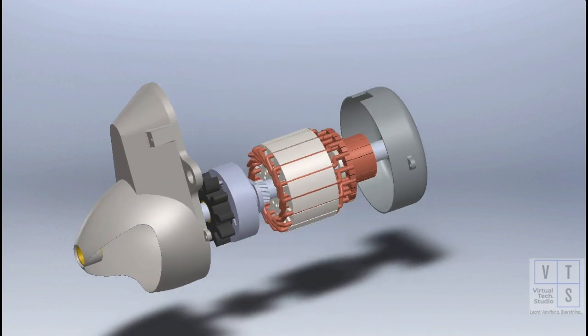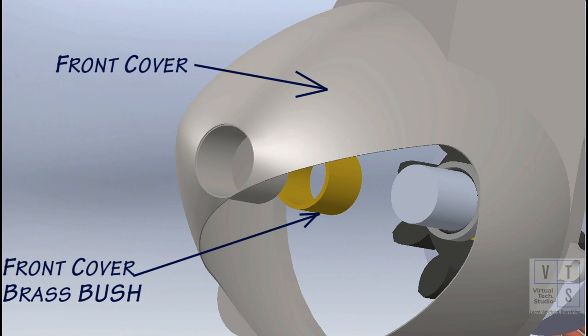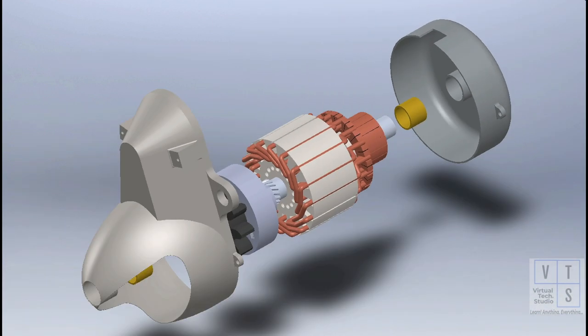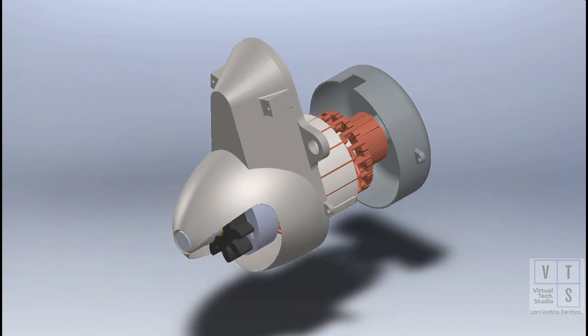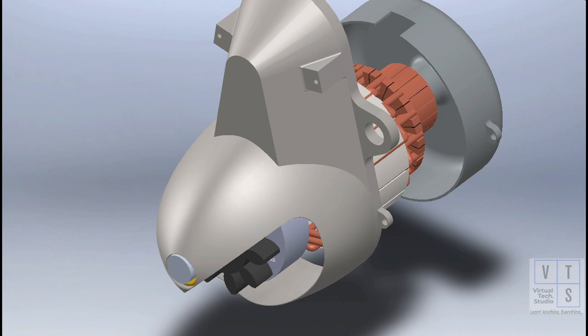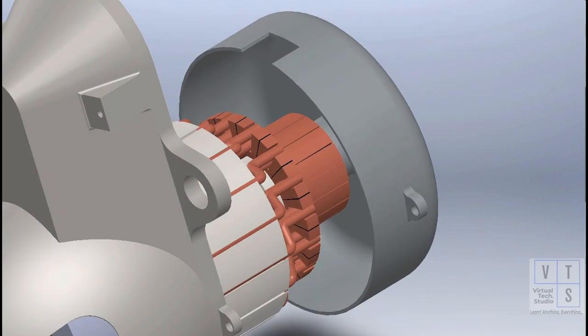Shaft is supported at either end with the help of brass bushes. When pinion is rotated, check the front and rear housings back and forth. If the play is too much, the bushes have been worn out and new bushes are to be installed.